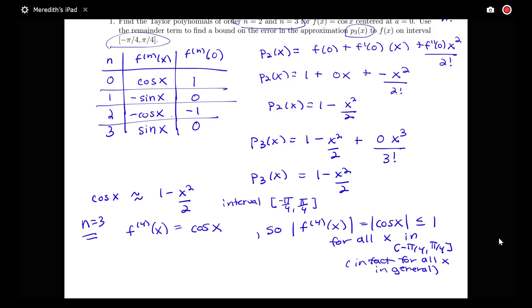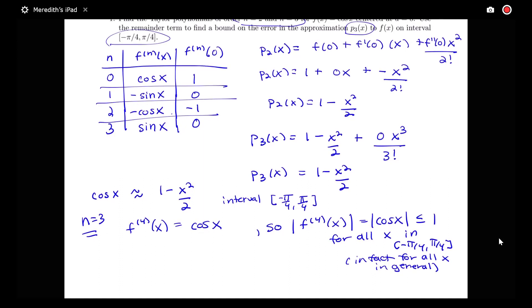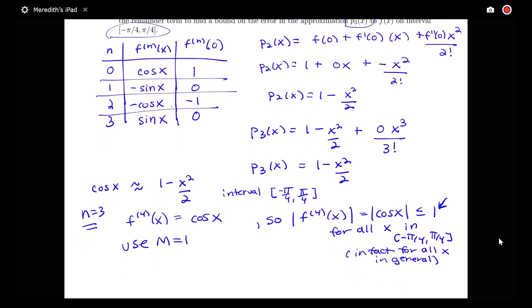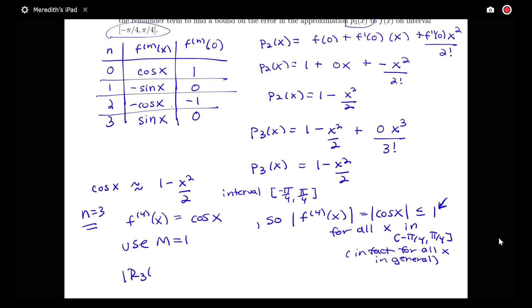So I've got a bound on my fourth derivative. So I'm going to use this number m here, this number 1 as my m. So I can now say that my r3 of x then is less than or equal to my m times x minus